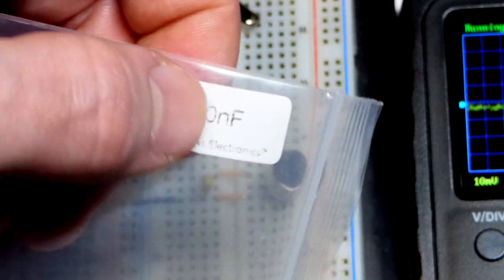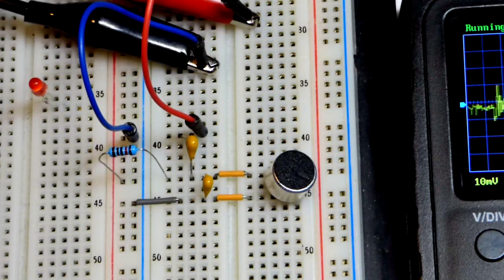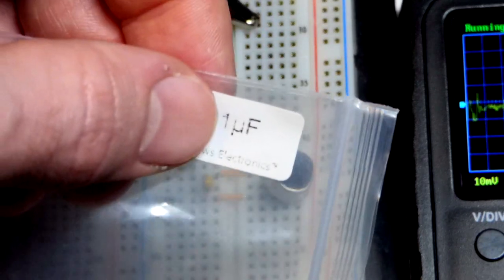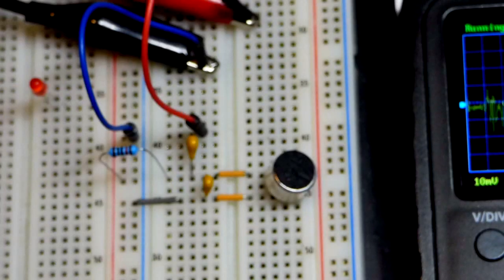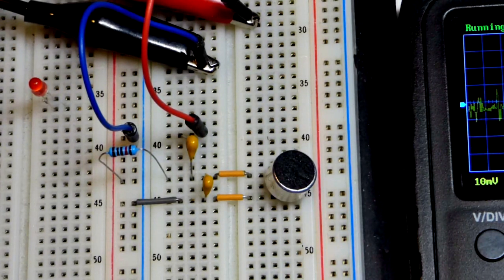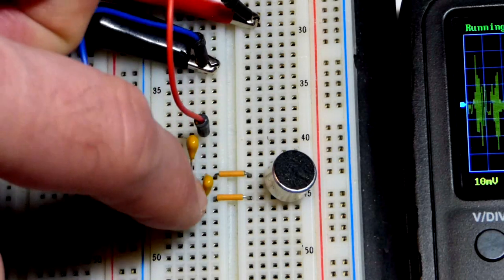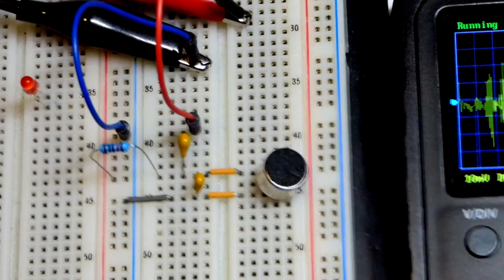It takes one billion, with a B, nanofarads to equal one farad. And it takes one million microfarad to equal one farad. And so that U shape is actually the Greek letter mu. So that is a 100 nanofarad or 0.1 microfarad. And that one is the 10 nanofarad.